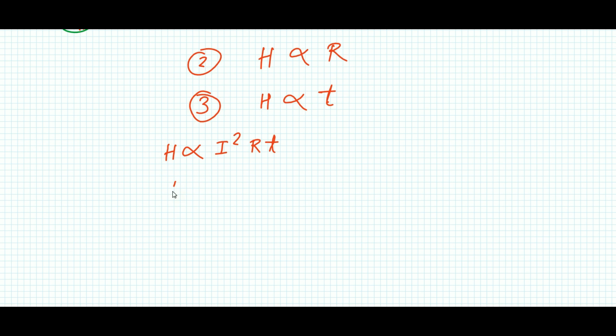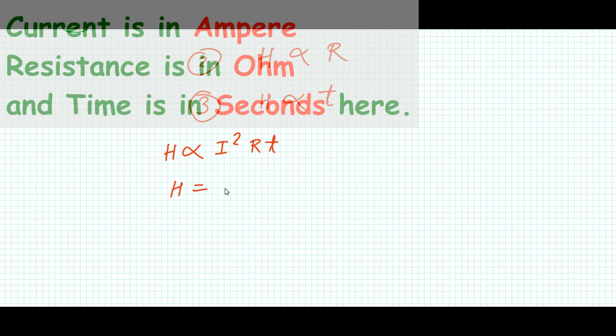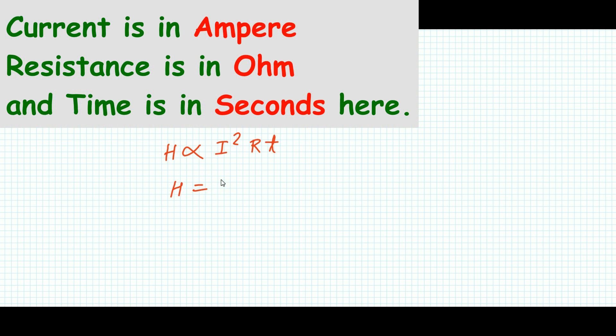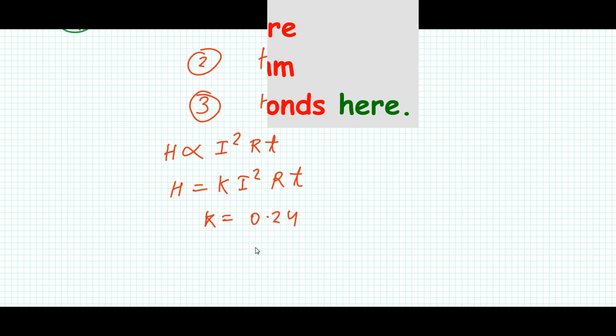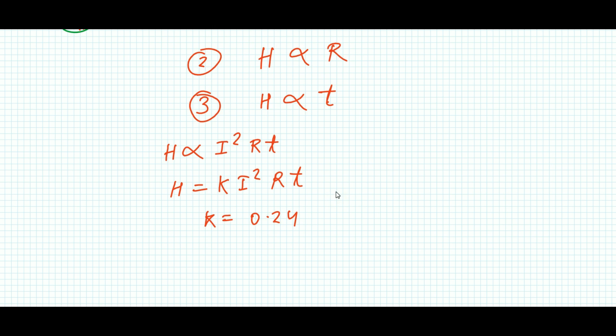That means heat generated is directly proportional to I square RT. Just I have combined all three of the equations. So I can say H equals K I square RT, by introducing this proportionality constant K.